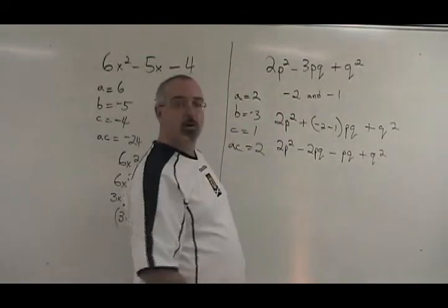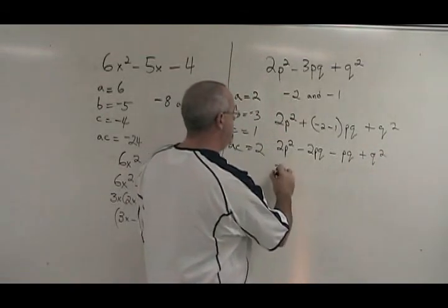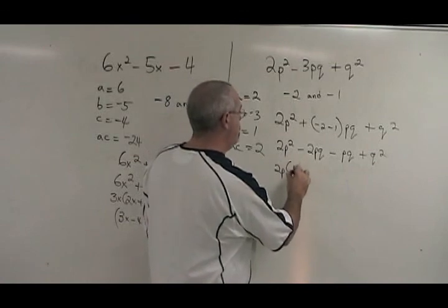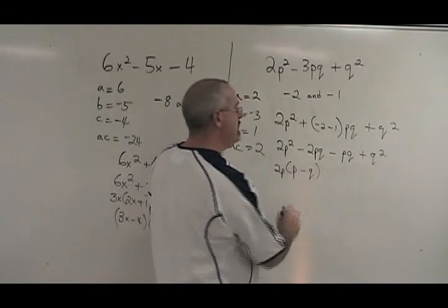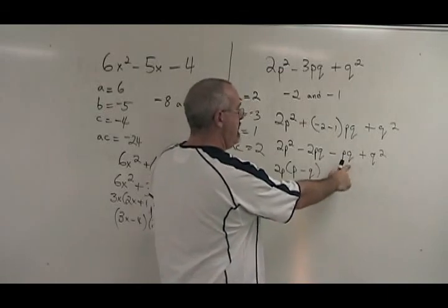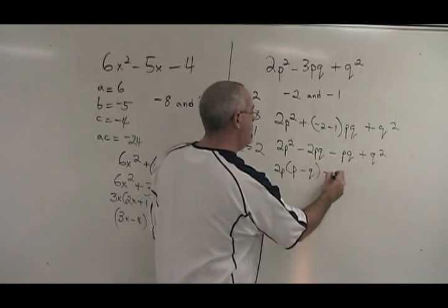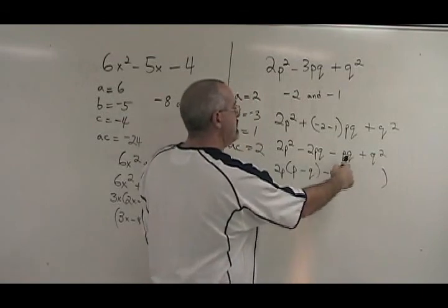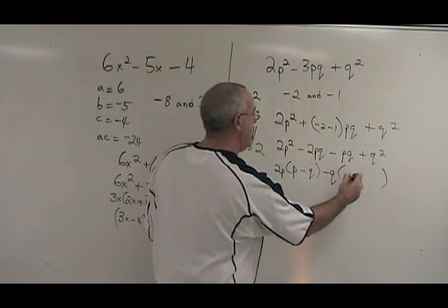And now we do a grouping. The greatest common factor of these two is 2p. So we factor out a 2p and we get p minus q in the bracket. The greatest common factor of these two is q or negative q. We're going to take out a negative q because that forces the contents of the bracket to be positive.